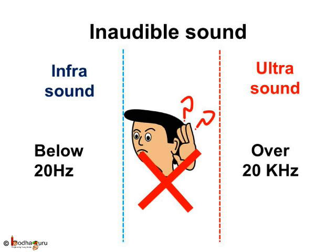Do you know why we cannot hear some sounds while other living things like a bat can? We cannot detect some sounds which have a frequency below the audible range of hearing, i.e., less than 20 Hz, or above 20 kHz. It is said to be inaudible sound. Sound with a frequency below the audible range of hearing, i.e., less than 20 Hz, is known as infrasound.